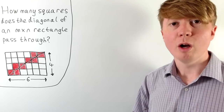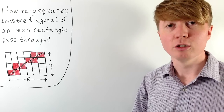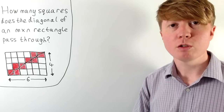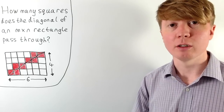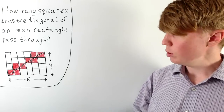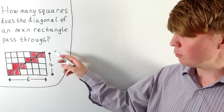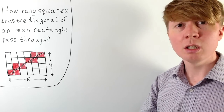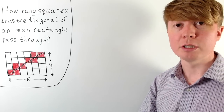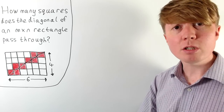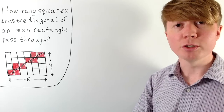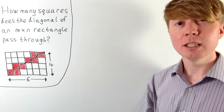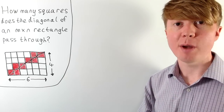We're going to solve a problem where we have a rectangle drawn on a square grid and we want to count how many squares the diagonal of the rectangle passes through. For example, for a 6 by 4 rectangle, you can see just by drawing a picture that the diagonal passes through a total of 8 squares. We want to solve this more generally: for an m by n rectangle, how many squares is the diagonal going to pass through?